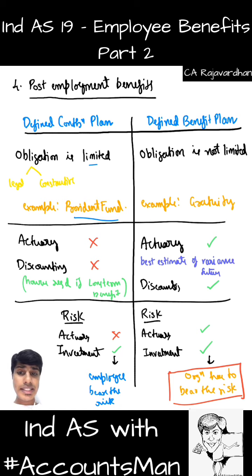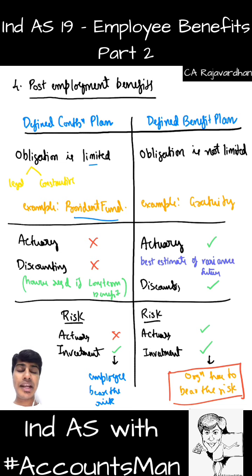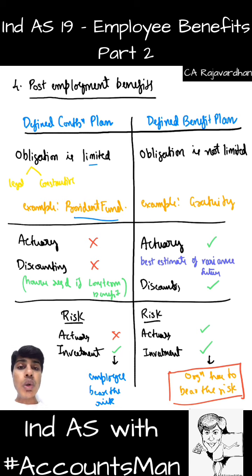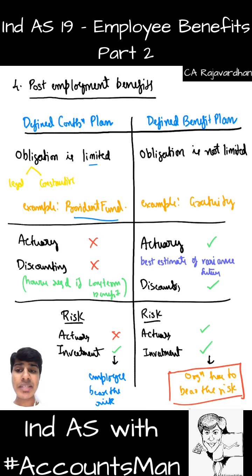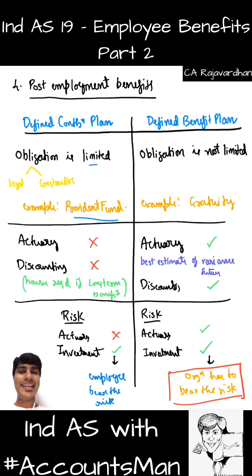With defined benefit plan, if the organization has promised certain benefits and started saving in plan assets, but on that day the plan assets didn't generate enough money to pay the liability, the organization cannot tell the employee it can't give the promised benefit because assets fell short. That is the organization's mistake — investment risk materialized — so the organization has to bear this risk. We are not done with the complete discussion on defined contribution and defined benefit plans; recognition, accounting treatment, and balance sheet presentation will be covered in tomorrow's session.